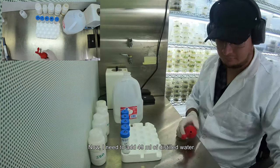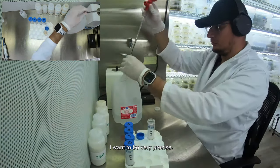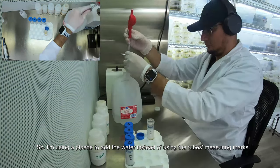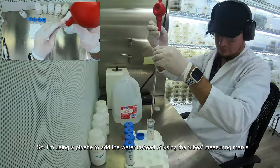Now I need to add 49 ml of distilled water. I want to be very precise, so I'm using a pipette to add the water instead of using the tube's measuring marks.